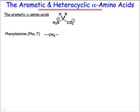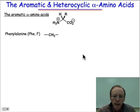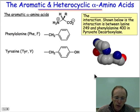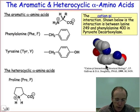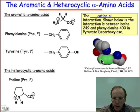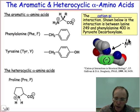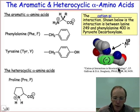The next set are the aromatic and heterocyclic amino acids. Phenylalanine has the structure shown. Tyrosine is very similar — it has the CH2 phenyl group, but in the 4 position it has a hydroxyl group. These aromatic amino acids are capable of interacting in what's known as a cation-pi interaction, where the negative electron cloud of an aromatic ring interacts with a positively charged ammonium cation. That's an important interaction in ion channels and other protein structures.